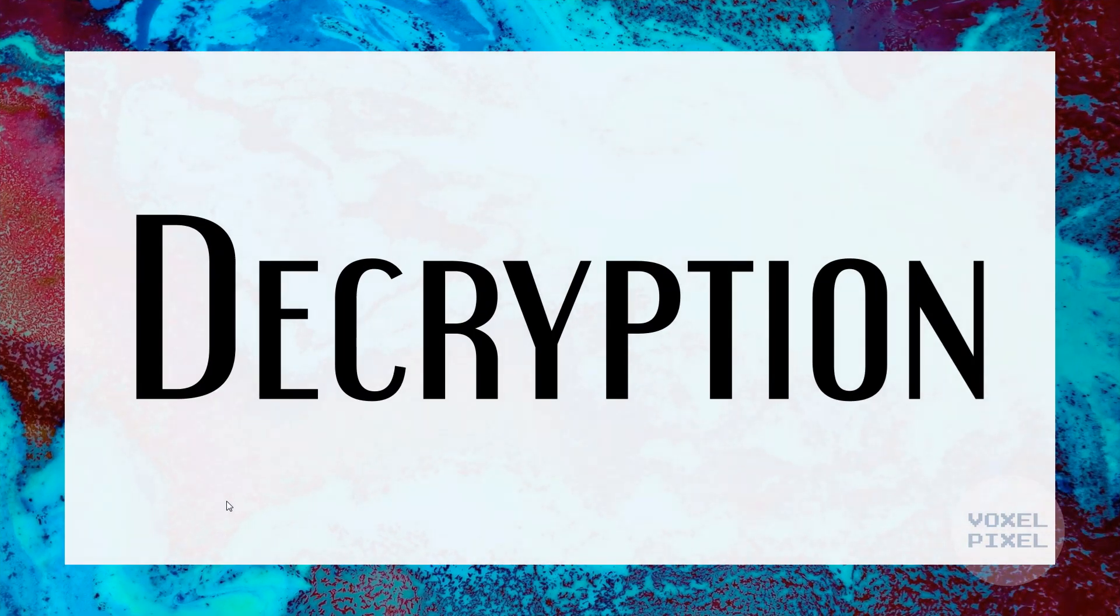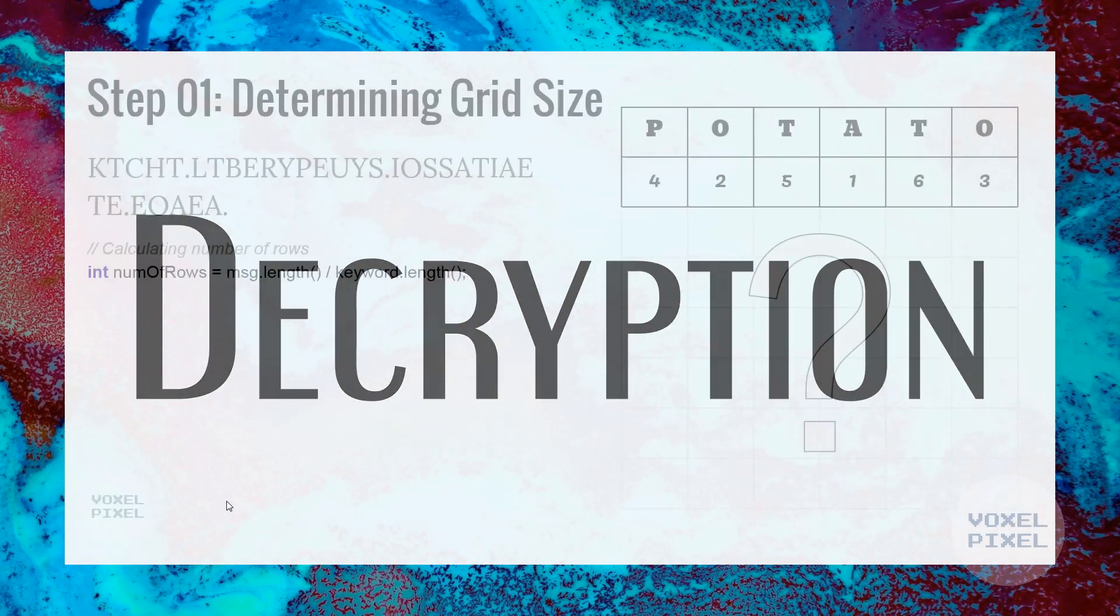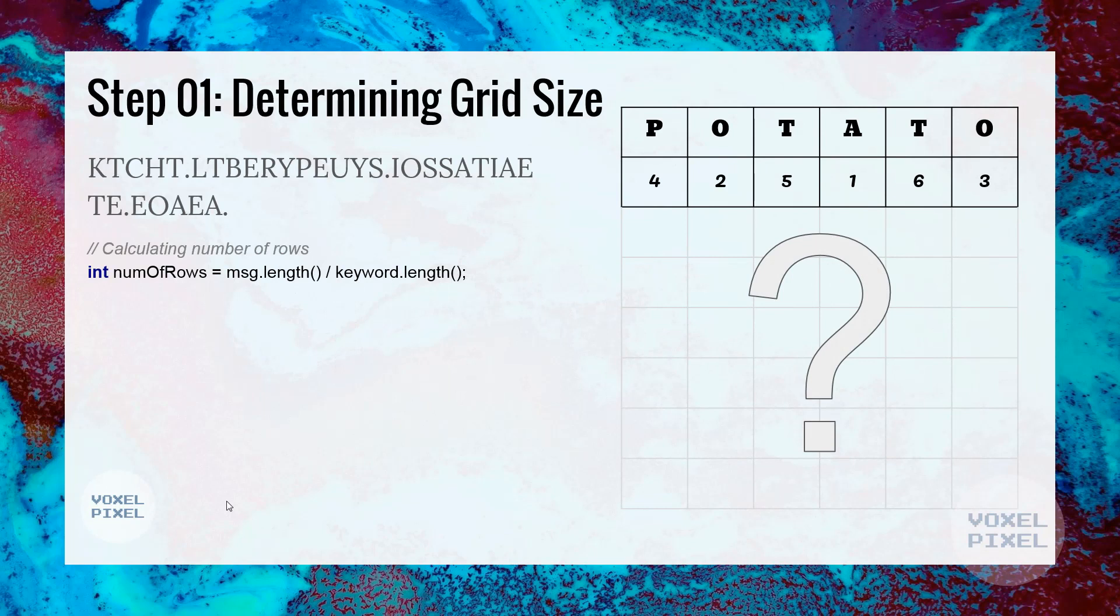Now, let's check out the decryption process. We will determine size of the grid. For that, we will first calculate the number of rows, and that we can obtain by length of the message divided by length of the keyword.